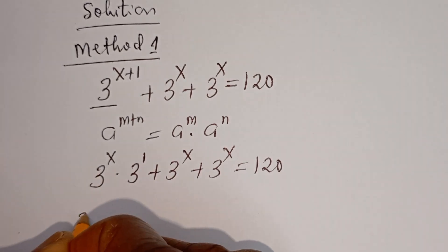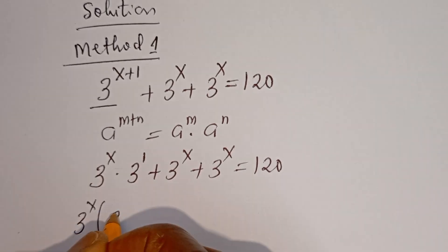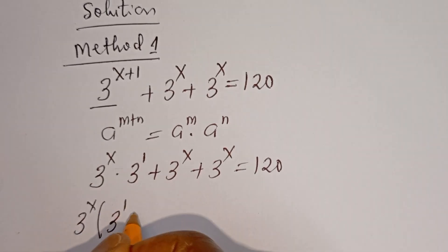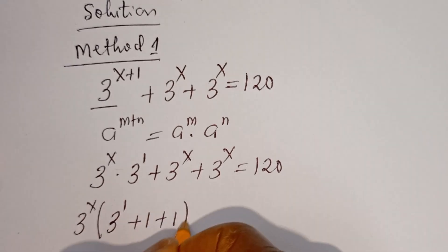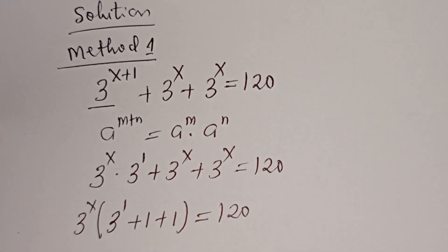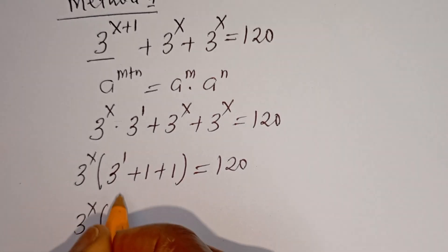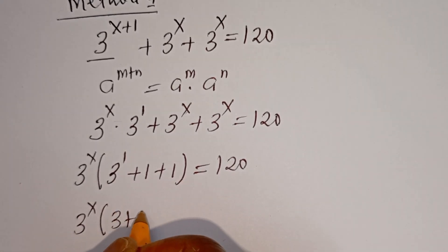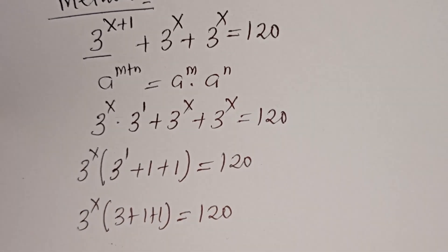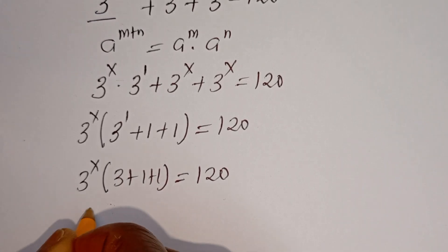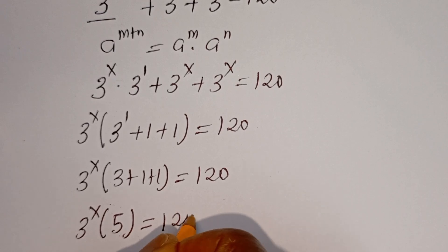Now 3 to the power of S is common — let's bring it out. We have 3 to the power of S, bracket 3 to the power of 1 plus 1 plus 1, is equal to 120. Then 3 to the power of S bracket 5 is equal to 120.